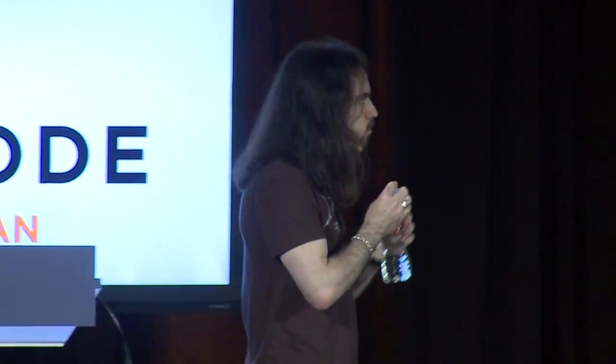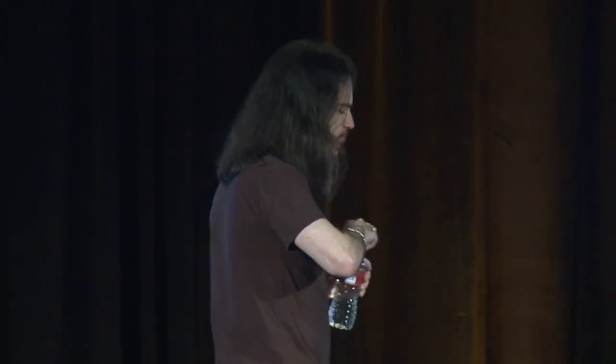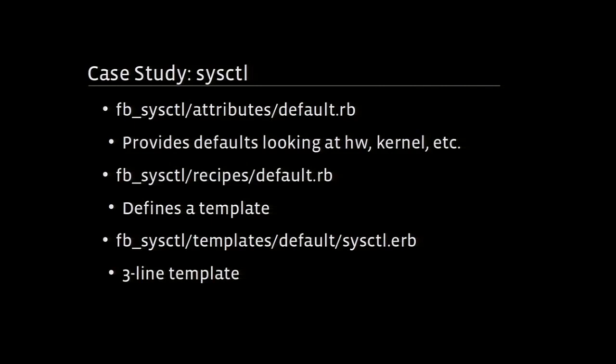So we decided to solve that problem. We wrote a cookbook called FBSysControl, and it's super simple. In attributes, we build a hash of every possible sysctl we could care about. It's mostly the kernel defaults, but in many cases we look at the hardware and decide to bump things up or down. We basically do a little calculation to come up with what you want — for the vast majority of people at Facebook, these values are going to work.